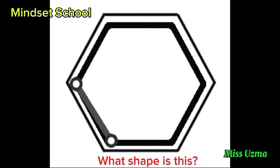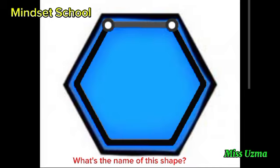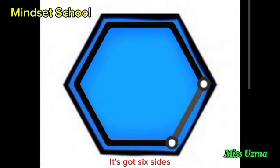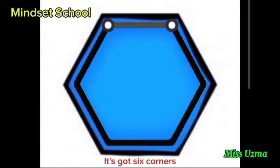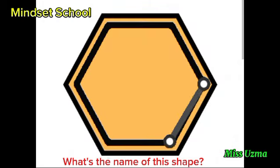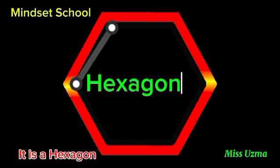What shape is this? What's the name of this shape? It's got six sides. It's got six corners. What is the name of this shape? It is a hexagon.